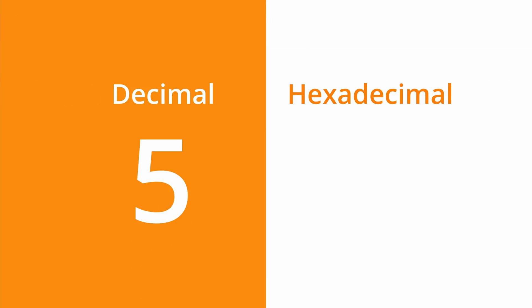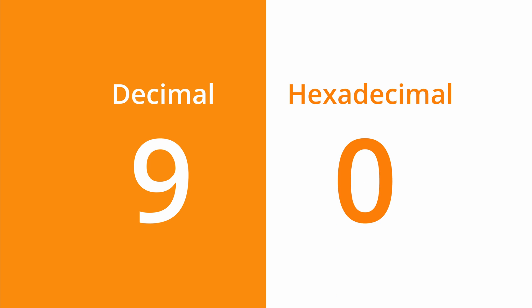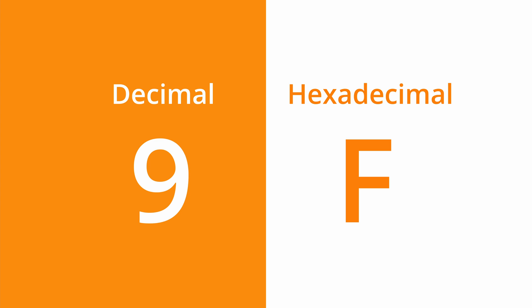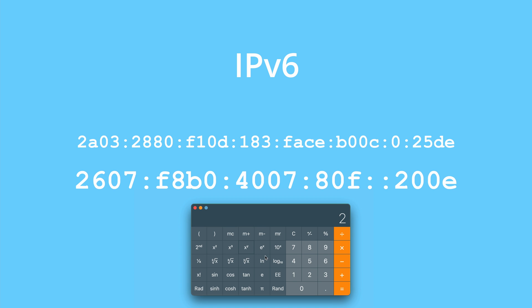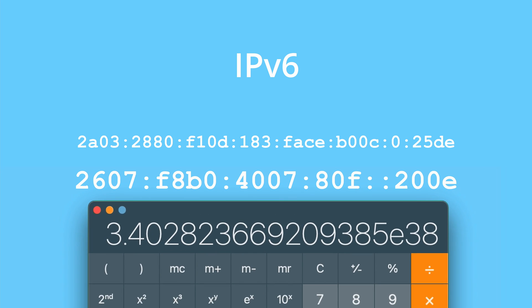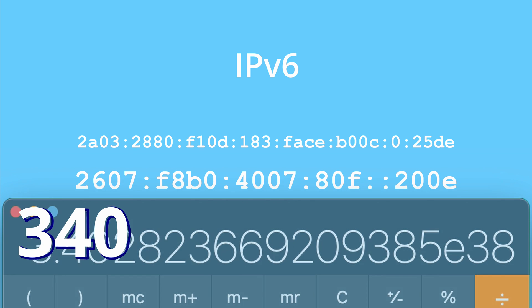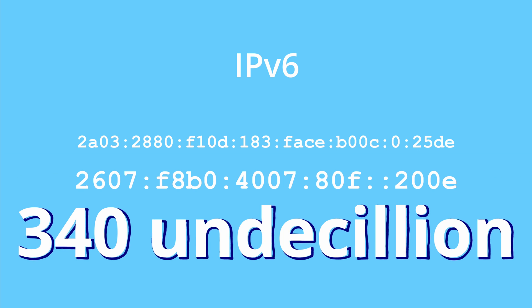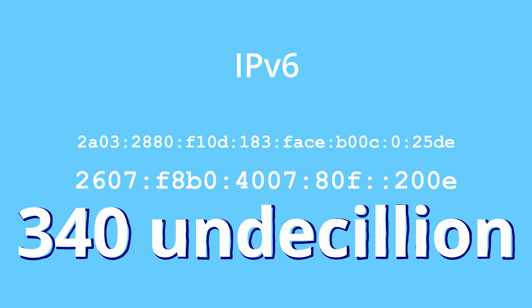In case you're not familiar, we count in decimal, which has 10 digits that go from 0 to 9, whereas hexadecimal has 16 digits that go from 0 to F. There are 2 to the power of 128 different combinations of IP version 6 addresses, and this equates to over 340 undecillion different combinations, which is such a large number that it's very hard to even comprehend.